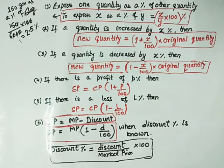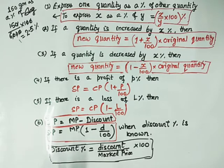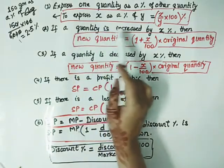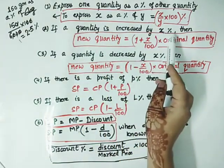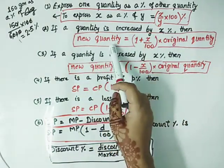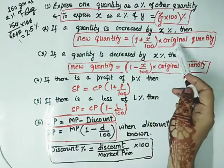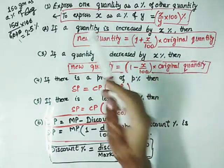The second formula: if a quantity is increased by x percent, then the new quantity will be (1 + x/100) into original quantity.